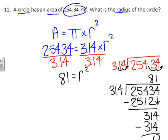Now, we're not done yet. Remember, r squared means r times r. So what we need to figure out is what number times itself is 81, or what's the square root of 81. And the answer to that is 9. So the radius is 9 meters.